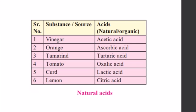Here are a few acids present in the food we consume in our day-to-day life: vinegar contains acetic acid, orange contains ascorbic acid, tamarind contains tartaric acid, tomato contains oxalic acid, curd contains lactic acid, and lemon contains citric acid. These are all natural acids, also called organic acids, which are naturally present in these materials. These are weak acids.